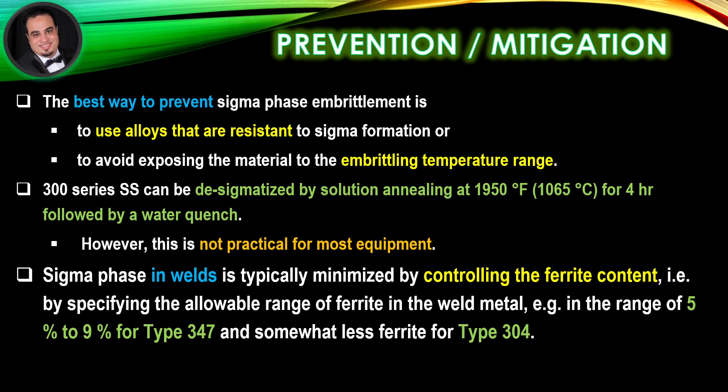The best way to prevent sigma phase embrittlement is to use alloys that are resistant to sigma formation, or to avoid exposing the material to the embrittling temperature range. 300 series stainless steel can be desigmatized by solution annealing at 1950 degrees Fahrenheit for 4 hours, followed by a water quench. However, this is not practical for most equipment. Limiting the maximum ferrite content minimizes sigma formation during service or fabrication.